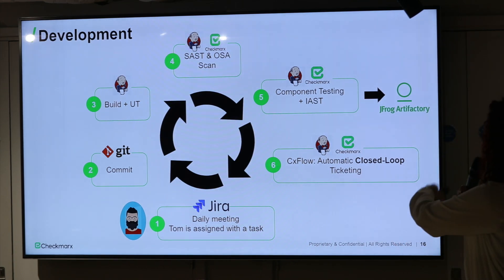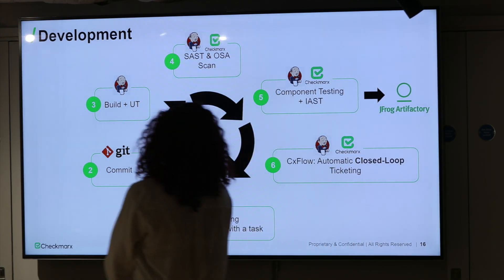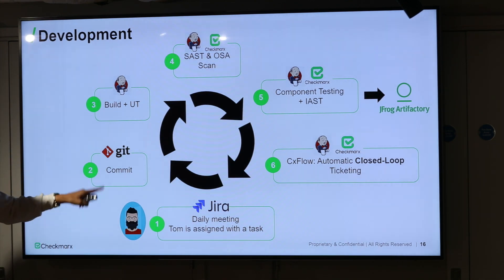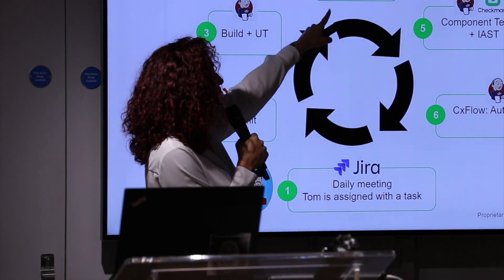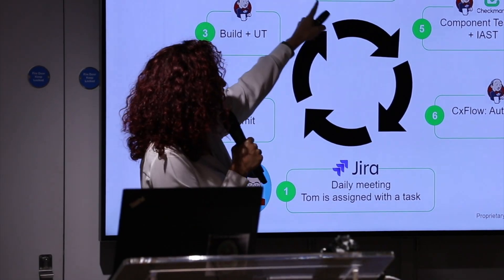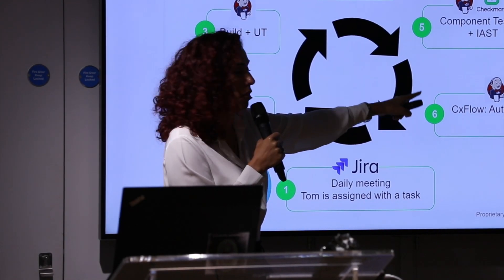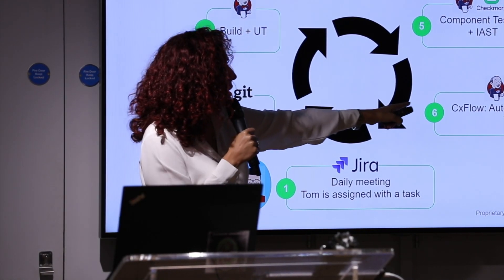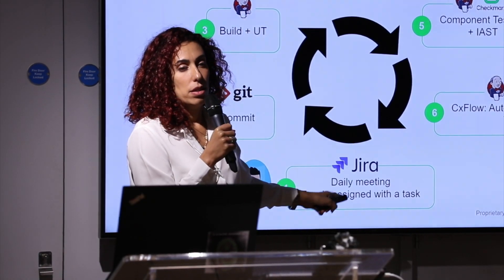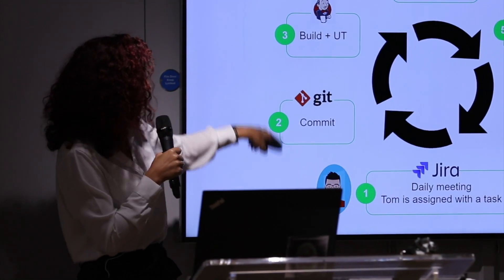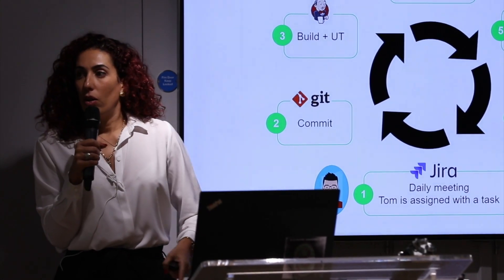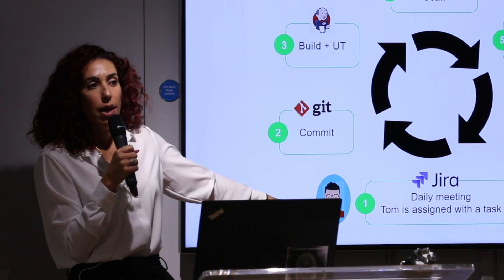CxFlow is a rather new product from Checkmarx that closes the loop automatically — back to Jira. Imagine Tom, in the zone, committed code with an SQL injection. The scan identified it. What CxFlow does is take the result from the scan and automatically open a bug ticket in Jira. Nothing interrupted Tom.